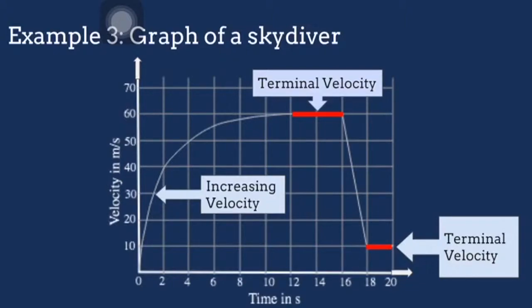From t = 16 to t = 18 seconds, the air resistance acting on the skydiver increases, slowing him down at a constant decelerating rate of 25 m/s². From t = 18 to t = 20 seconds, the skydiver continues to slow down until air resistance equals his weight again, therefore reaching terminal velocity once more. We have come to the end of our crash course, and we hope that you have managed to refresh your memory on kinematics.